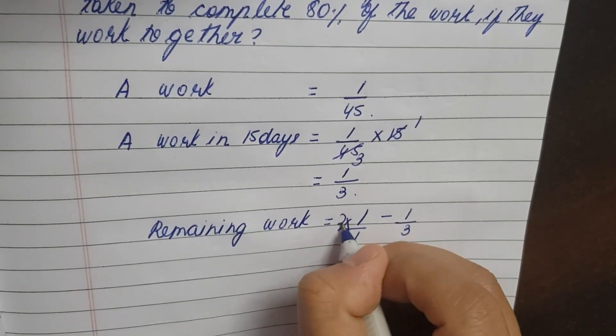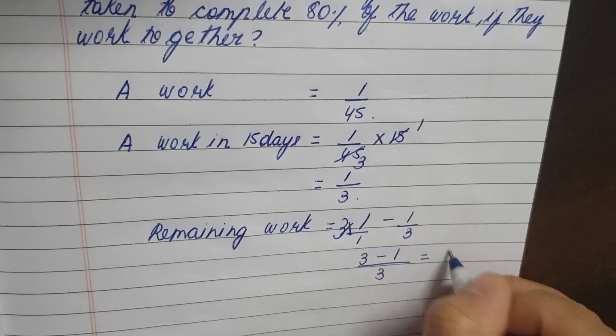3, it multiplied by 3. So 3 times 1 is 3 minus 1. So 2 by 3.